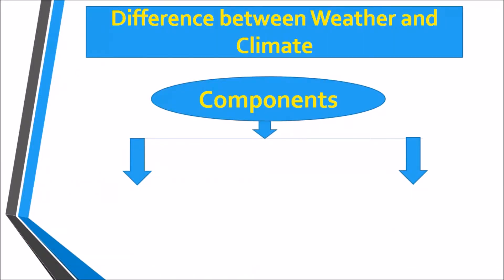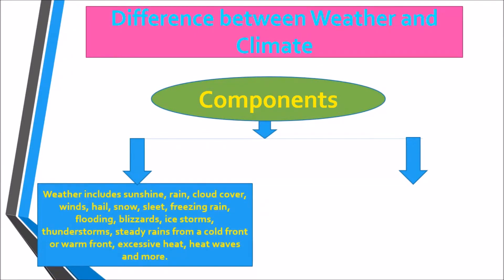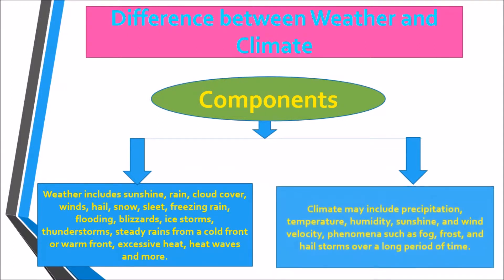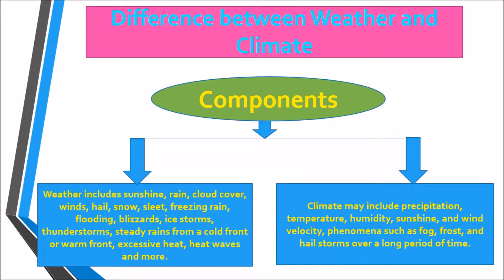What are the components of weather and climate? Weather includes sunshine, rain, cloud cover, winds, hail, snow, sleet, freezing rain, flooding, blizzards, ice storms, thunderstorms, steady rains from a cold front or warm front, excessive heat, heat waves, and more.